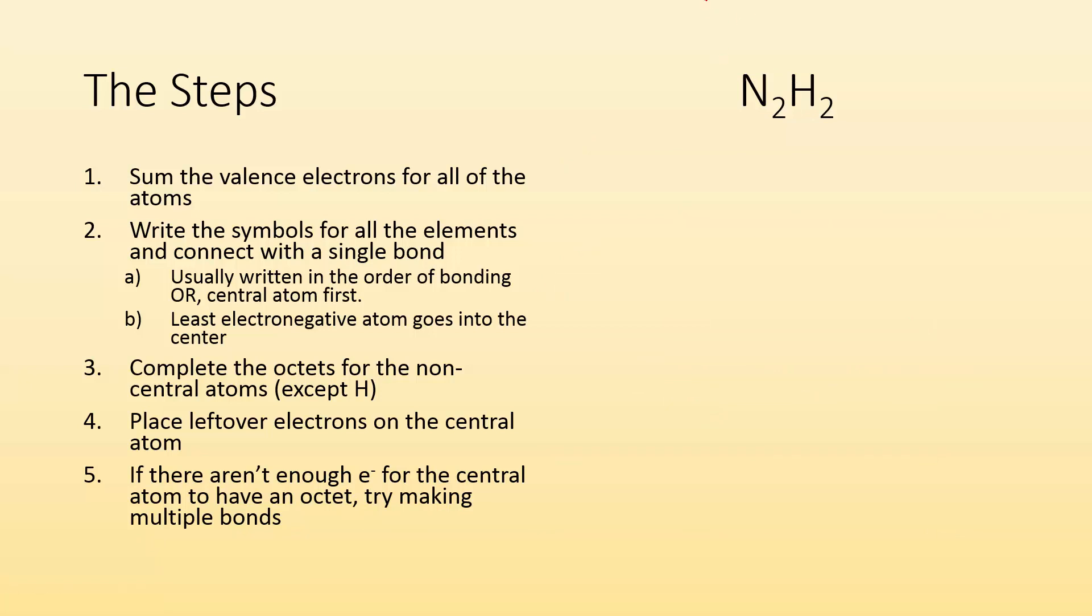N2H2. Sum the valence electrons. I got two nitrogens each with five valence electrons. And I have two hydrogens each with one valence electron. So I'm going to end up with 12 valence electrons. Step one, check. Write the symbols for the elements and connect with a single bond. This one, the only real way it's going to make sense is if I put the two nitrogens in the middle and have each one of them bonded to a hydrogen. Now it says complete the octets for the non-central atoms, except hydrogen, because hydrogen is only going to need two electrons and it's got that. So check.